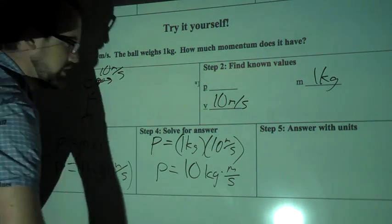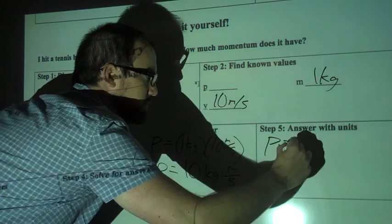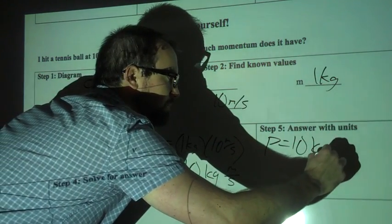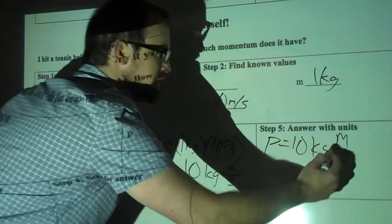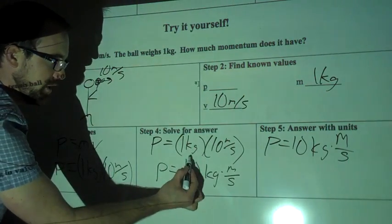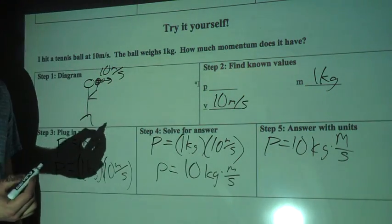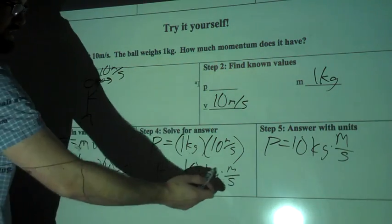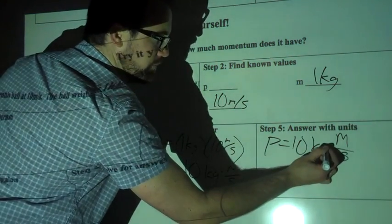And again, we'll write the answer with units up here. So P equals 10 kilogram times meters per second. I write the times in there because we multiply kilograms and meters per second together. That's how we got the answer, so it's kilogram meters per second.